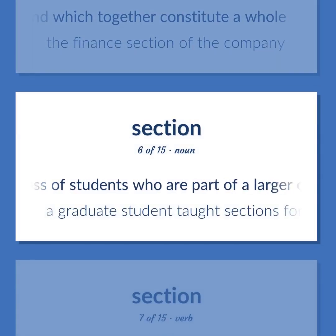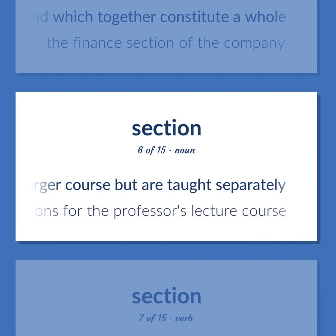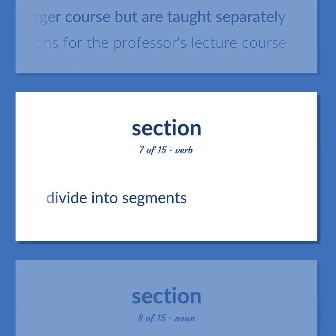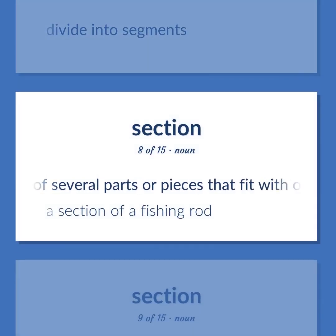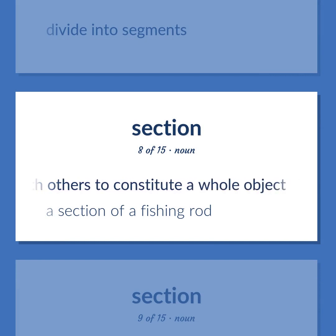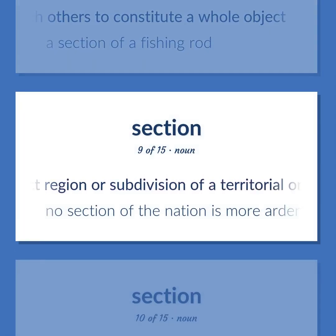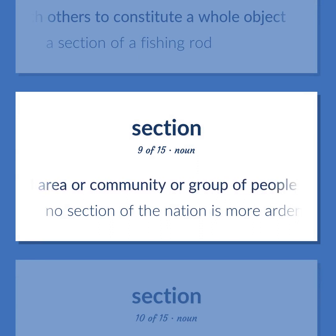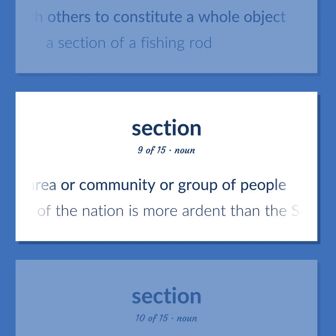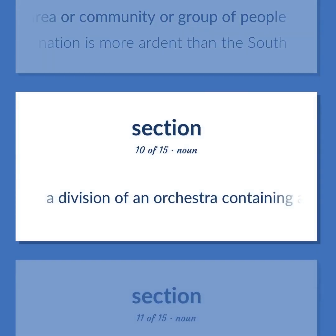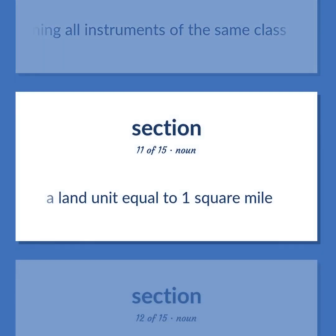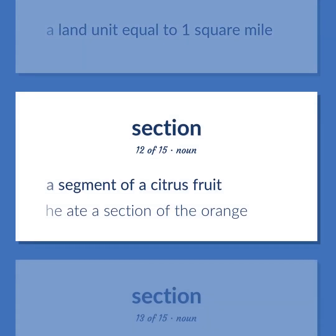Section: a small class of students who are part of a larger course but are taught separately — a graduate student taught sections for the professor's lecture course. Divide into segments. One of several parts or pieces that fit with others to constitute a whole object — a section of a fishing rod. A distinct region or subdivision of a territorial or political area — no section of the nation is more ardent than the South. A division of an orchestra containing all instruments of the same class. A land unit equal to one square mile. A segment of a citrus fruit — he ate a section of the orange.